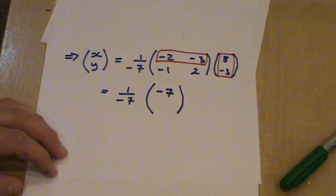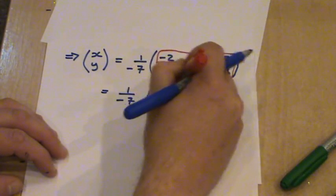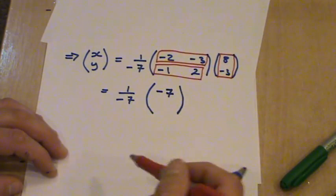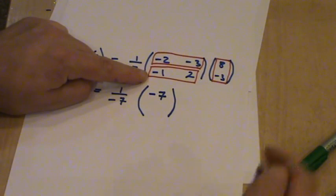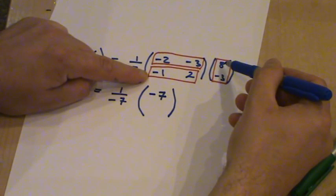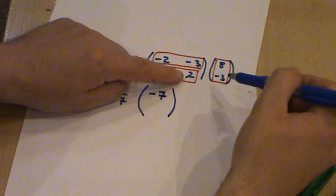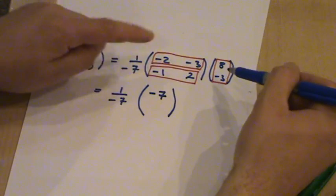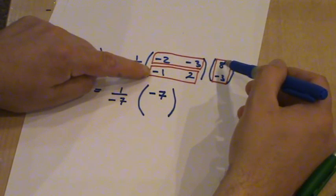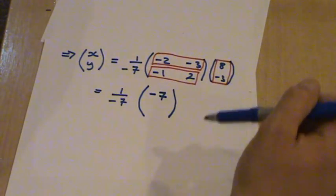To get the entry underneath this then, this time we have to use the second row to multiply this row by this column. So we have to multiply the minus 1 by the 8, which is minus 8, and then we have to multiply 2 by the minus 3, which is minus 6. So we've got minus 8, minus 6, which is minus 14.